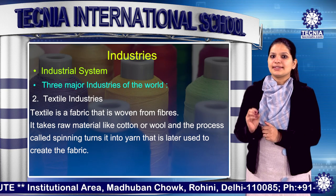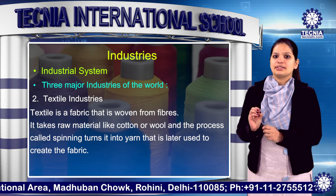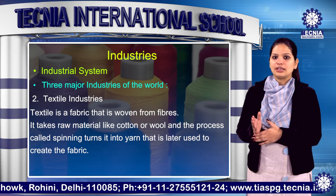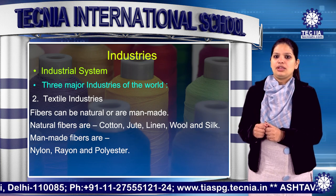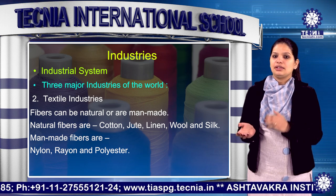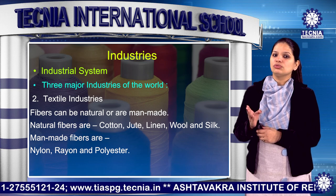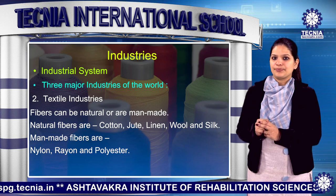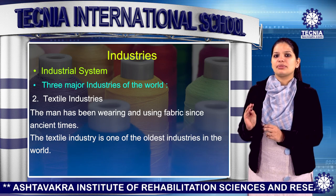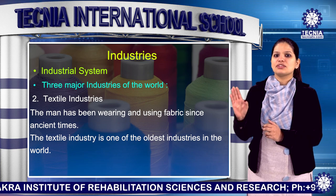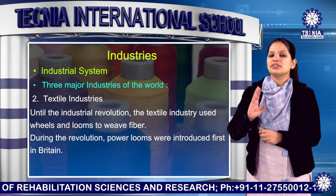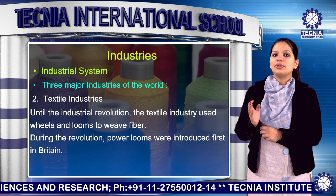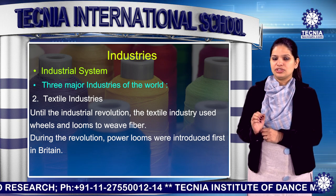Next is textile industries. Textile is a fabric that is woven from fibres. It takes raw material like cotton or wool, and the process called spinning turns it into a yarn that is later used to create the fabric. Fibres can be natural or manmade. Natural fibres are cotton, jute, wool and silk. Manmade fibres are nylon, rayon and polyester. The textile industry is one of the oldest industries in the world, and until the industrial revolution, it used wheels and looms to weave fibre. During the revolution, power looms were introduced first in Britain.